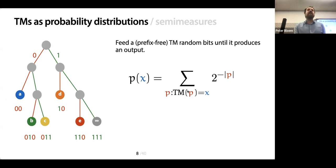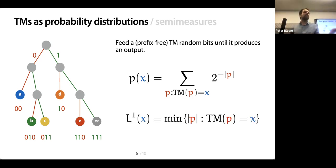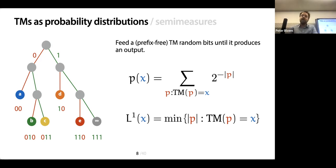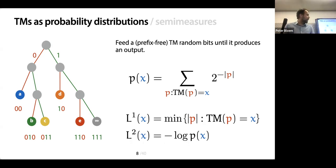You end up with an expression for the probability of seeing X coming out of this process for a given Turing machine. Now you can talk about the description length of X in two different ways. First, in the style of Kolmogorov complexity, the shortest description is the length of the shortest program on this Turing machine that produces X. But you can also use information theory or MDL: any probability distribution can be turned into a code, something like arithmetic coding, giving you a code length of the negative logarithm of the probability. These two description lengths differ, and that difference is important.